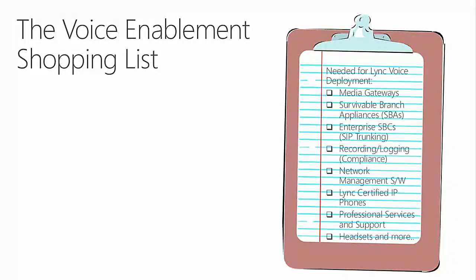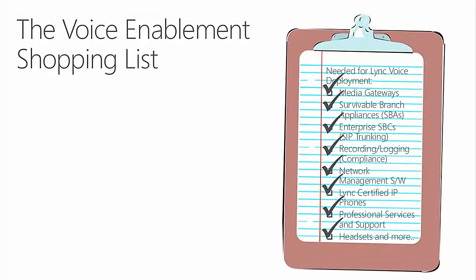Let's talk about the voice enablement shopping list. There are a lot of pieces to this puzzle that need to be purchased. You've gone from an IM&P deployment, and now you're implementing voice. Certainly some media gateways for connecting to the existing PBX or to the TDM public network. Maybe some survivable branch appliances providing local access and survivability at branch offices. Maybe enterprise session border controllers to support SIP trunking. Maybe recording and logging. Network management software. Lync-certified IP phones. A source for professional services, and headsets and other accessories.